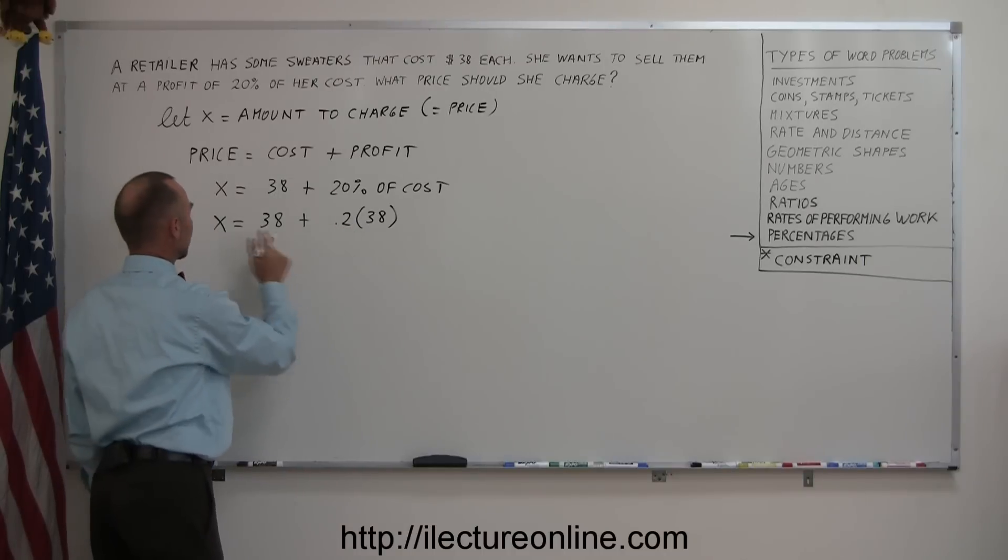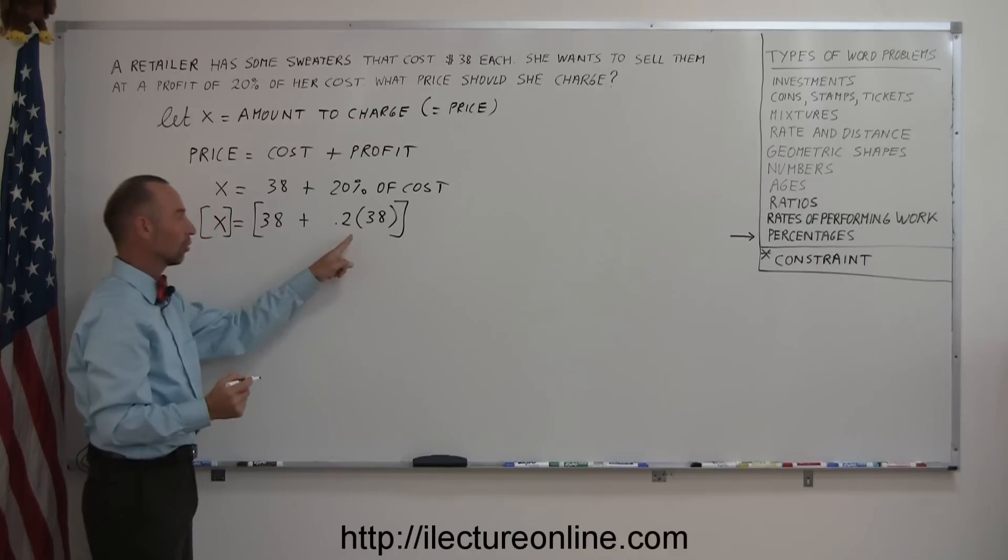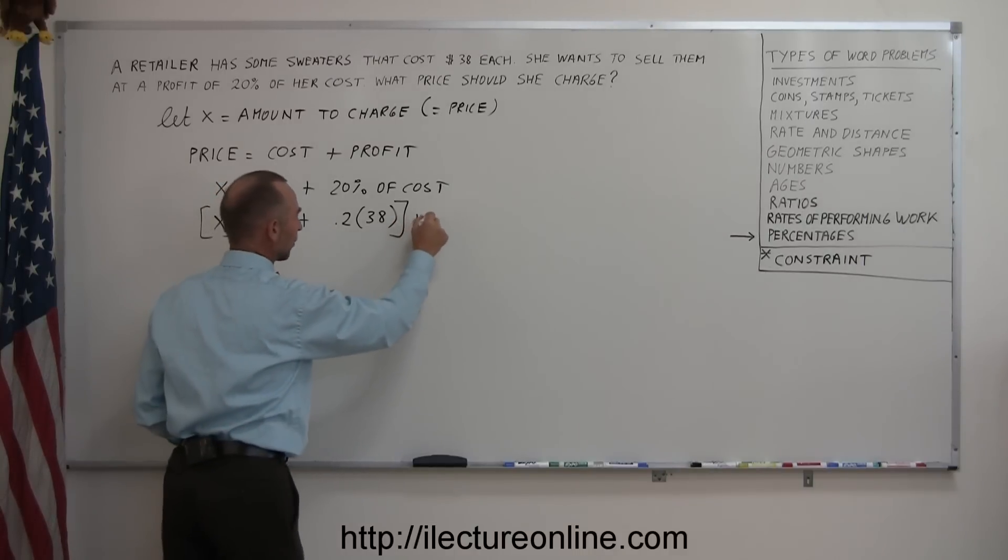Since we have a decimal place here, we want to multiply both sides by the appropriate amount to get rid of the 0.2. Since there's only one decimal place, we multiply both sides by 10.